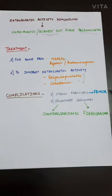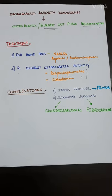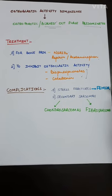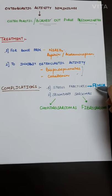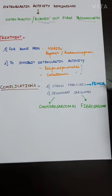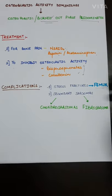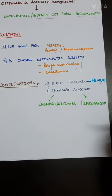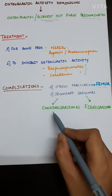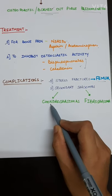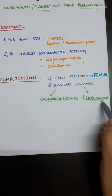So there are also complications of Paget's disease. First is stress fractures which occur in weight-bearing bones such as femur. Most commonly femur is involved, then tibia, pelvis, spine are also involved. Then secondary sarcomas are also there. This is one of the complications of Paget's disease such as chondrosarcomas and fibrosarcomas. Rarely osteosarcoma will occur.